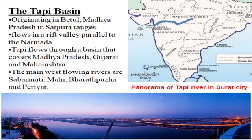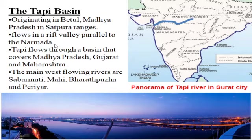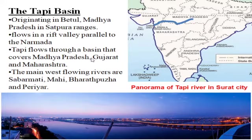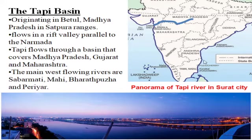Tapi basin originates in Betul, Madhya Pradesh. It originates from the Mahadeo Hills in the Satpura Range and flows in a rift valley parallel to the Narmada. The Tapi basin covers Madhya Pradesh, Gujarat, and Maharashtra. The main west-flowing rivers are Sabarmati, Mahi, Bharatpuzha, and Periyar — Sabarmati is from Rajasthan, Periyar is from the south.